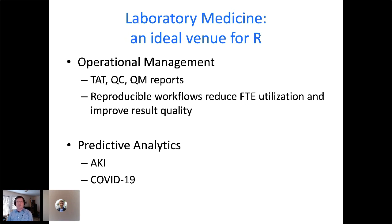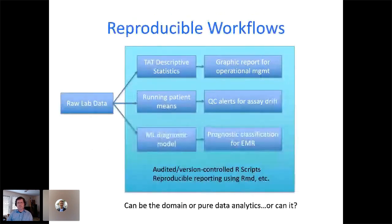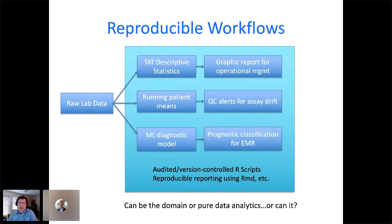Additionally, there's the issue of predictive analytics, which is of great interest. Several papers came out last year using lab data in part to predict acute kidney injury. Just this past week in the lab medicine literature, a classifier based on gradient boosting came out of a group from Weill Cornell Medicine that looked at using regular lab data — non-molecular lab data — to predict COVID-19 status. When we think about reproducible workflows in this context, we typically think about turnaround time descriptive statistics, moving averages to look at quality control for assay drift, or machine learning diagnostic models for prognostic classification. We want audited or version-controlled R scripts, reproducible reporting using R Markdown, and so on.